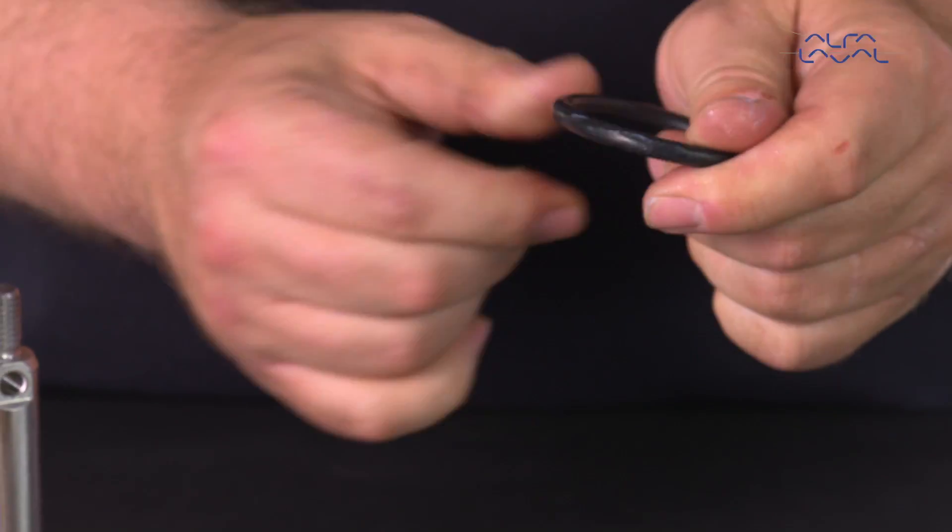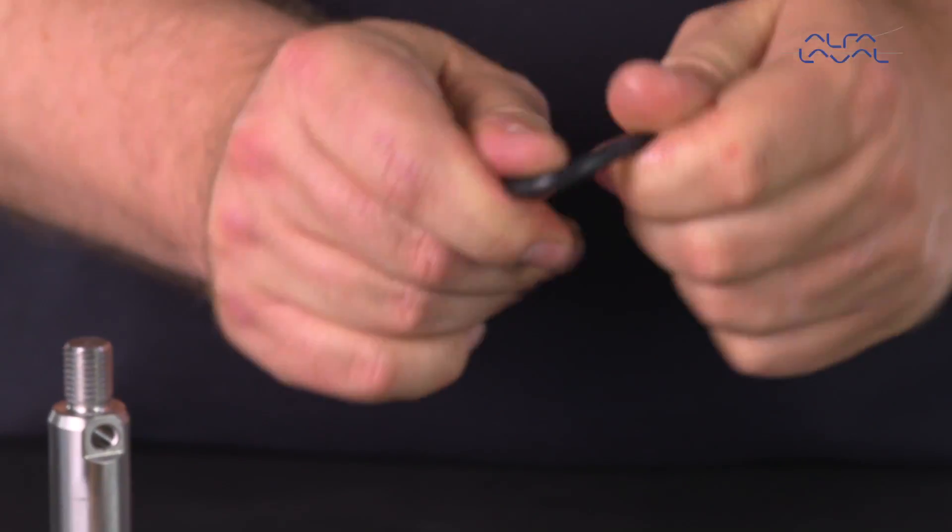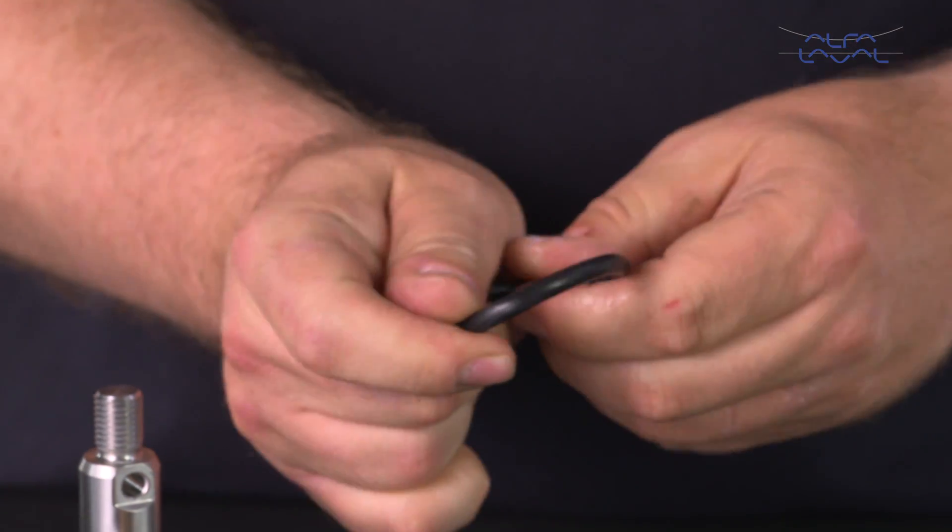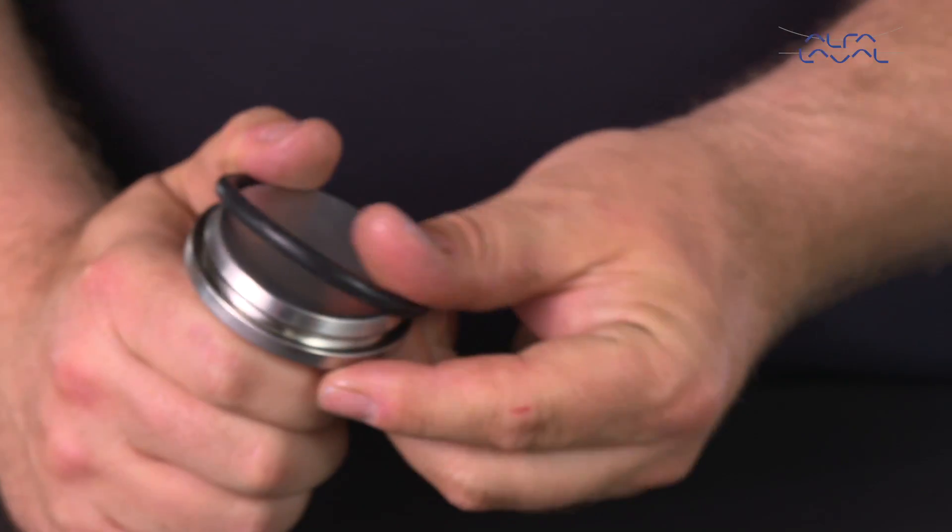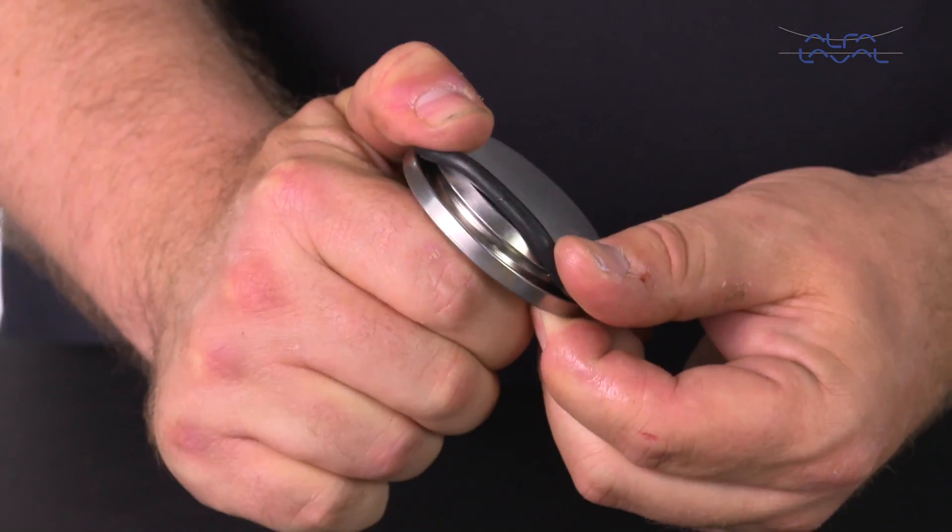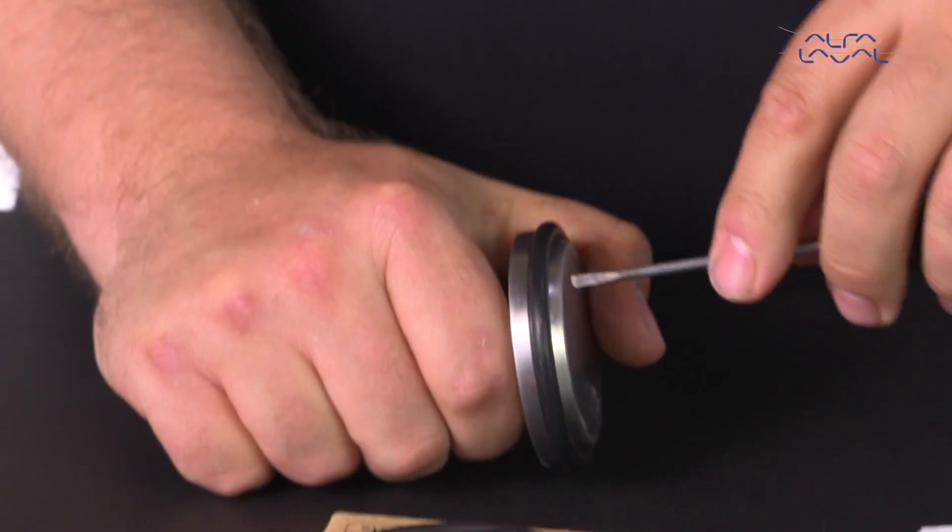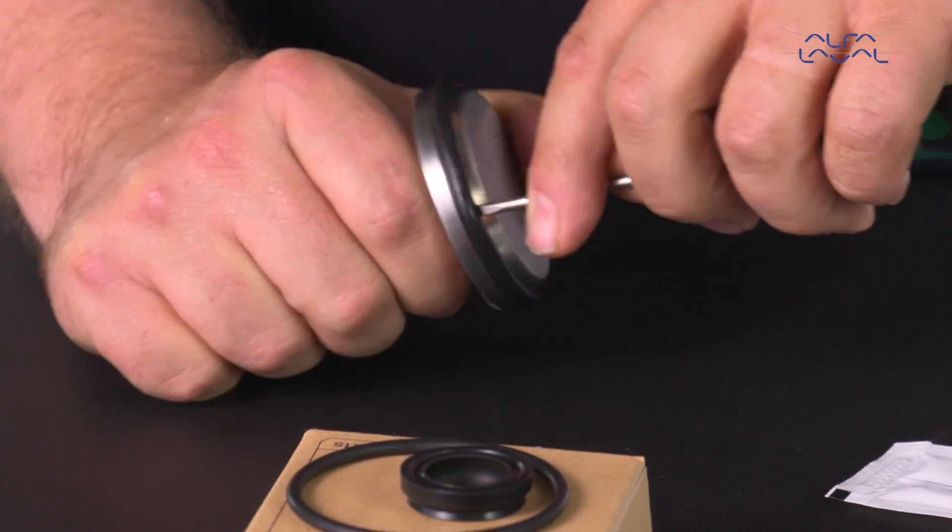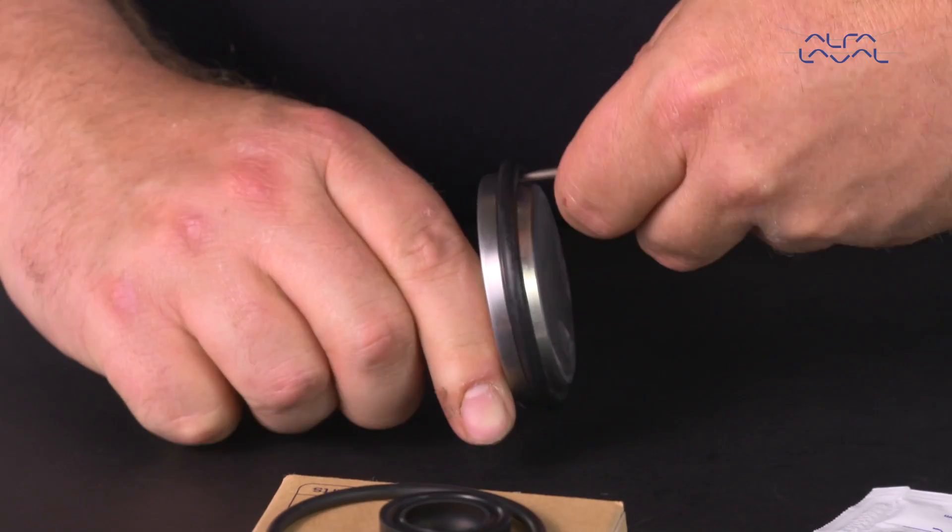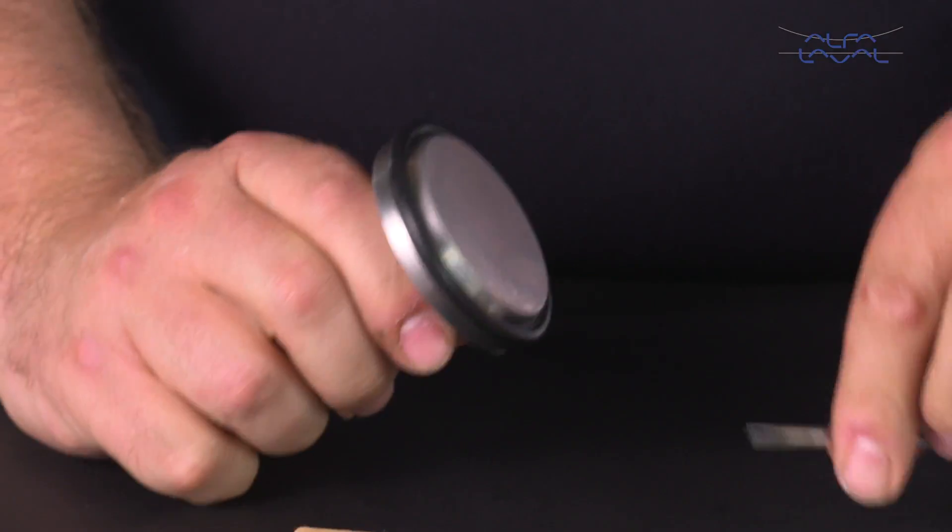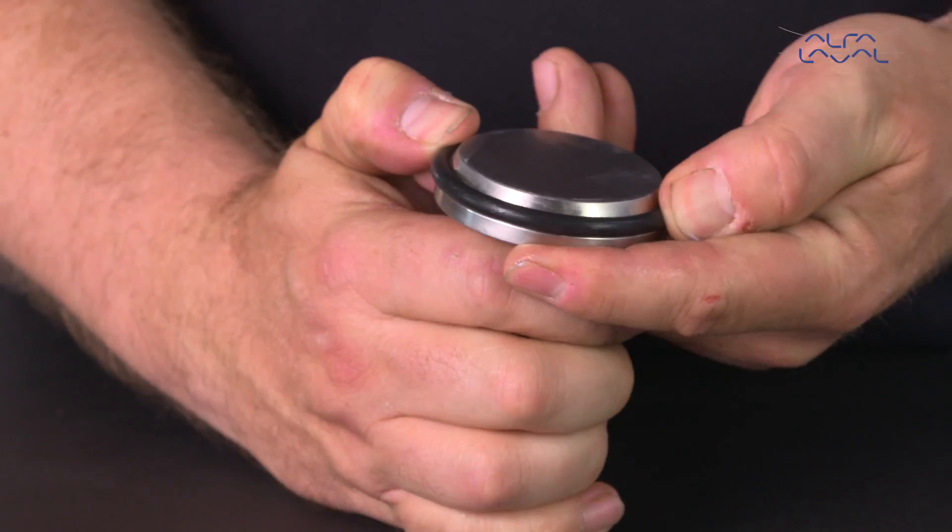Lubricate the valve plug seal ring and place the ring on the seal groove. Carefully place a small screwdriver on the backside of the seal ring and turn it 360 degrees to ensure that the seal ring did not twist or roll during installation.